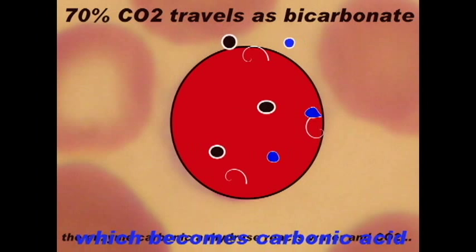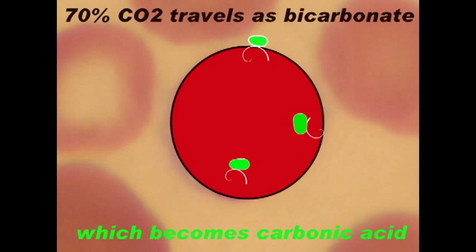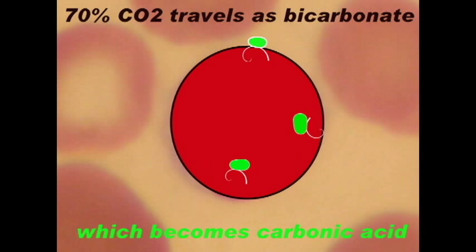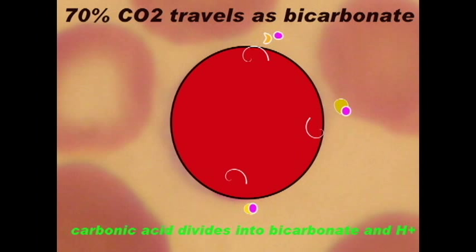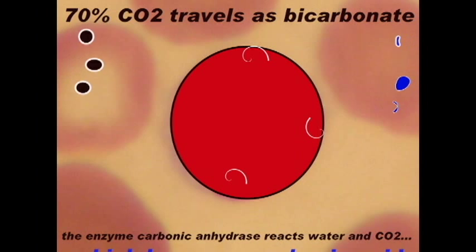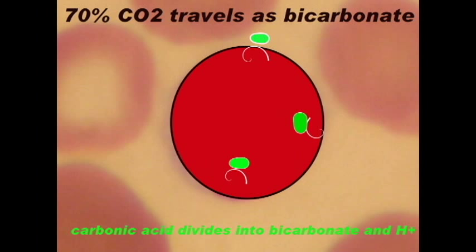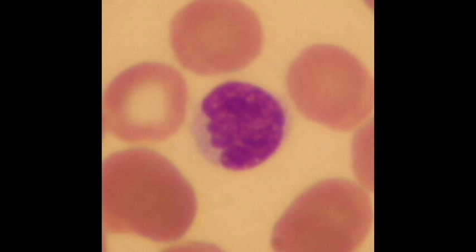Some of it, however, will be converted to bicarbonate. What happens is that carbon dioxide and water will combine to form carbonic acid. This will happen anyway, but red blood cells produce an enzyme called carbonic anhydrase which helps this occur much more quickly. So carbon dioxide and water become carbonic acid. Carbonic acid will then dissociate to become hydrogen ions and bicarbonate, and it is this bicarbonate which will then travel through the blood to the lungs.